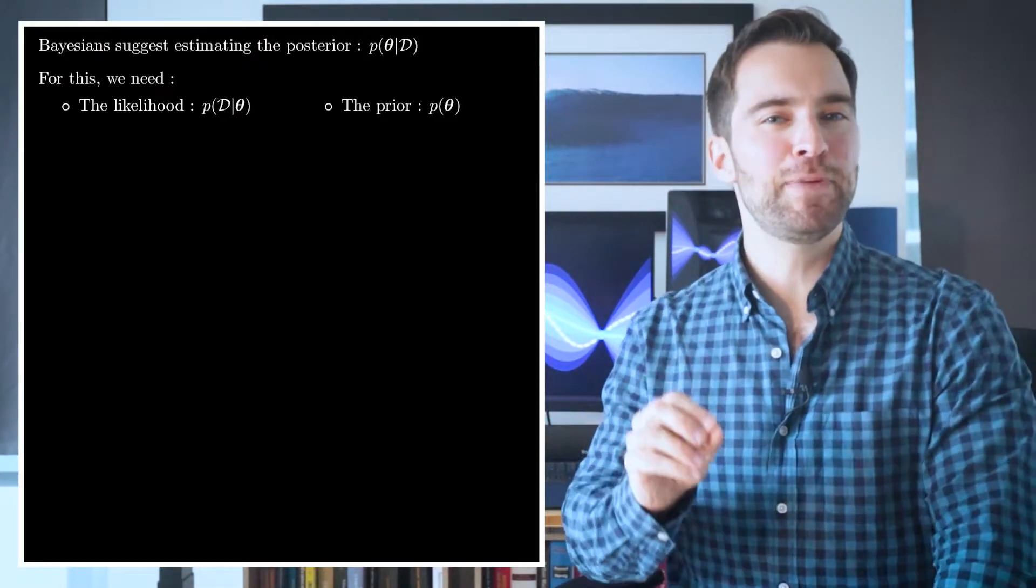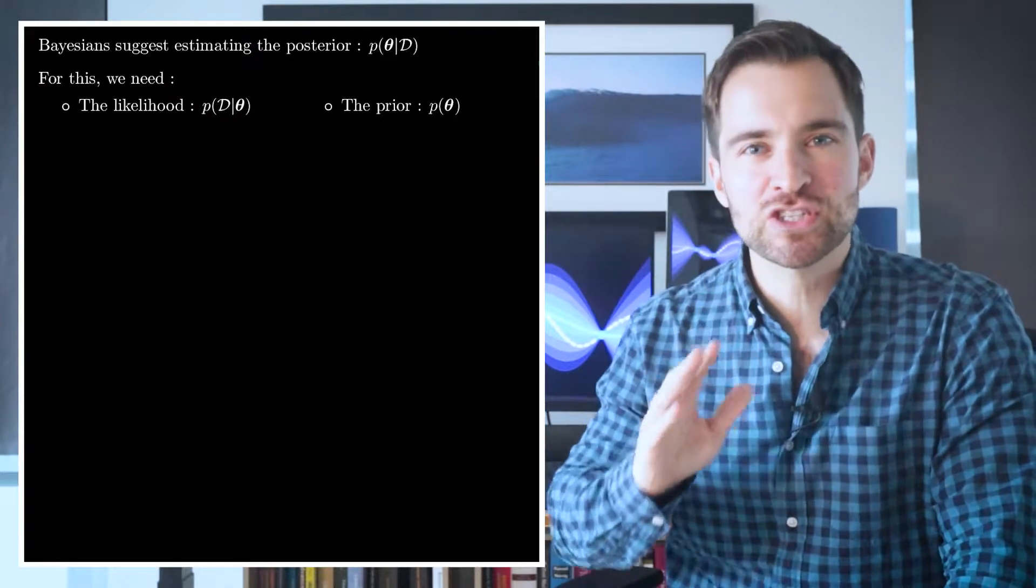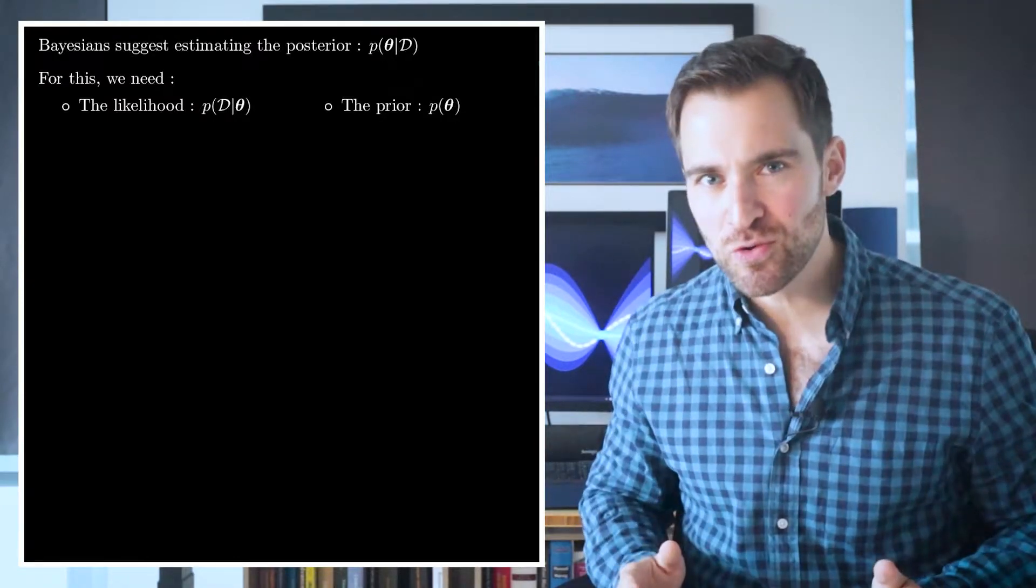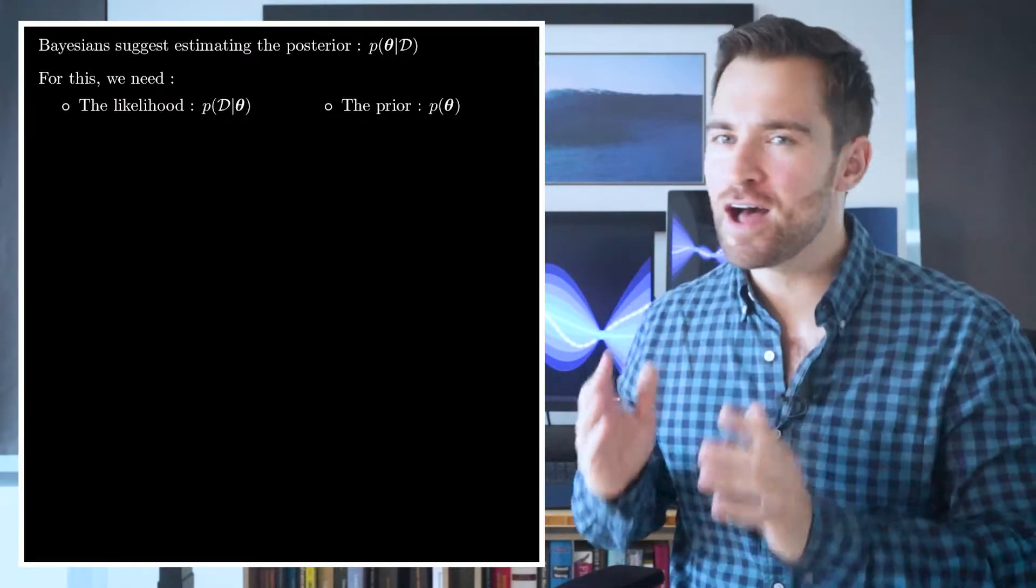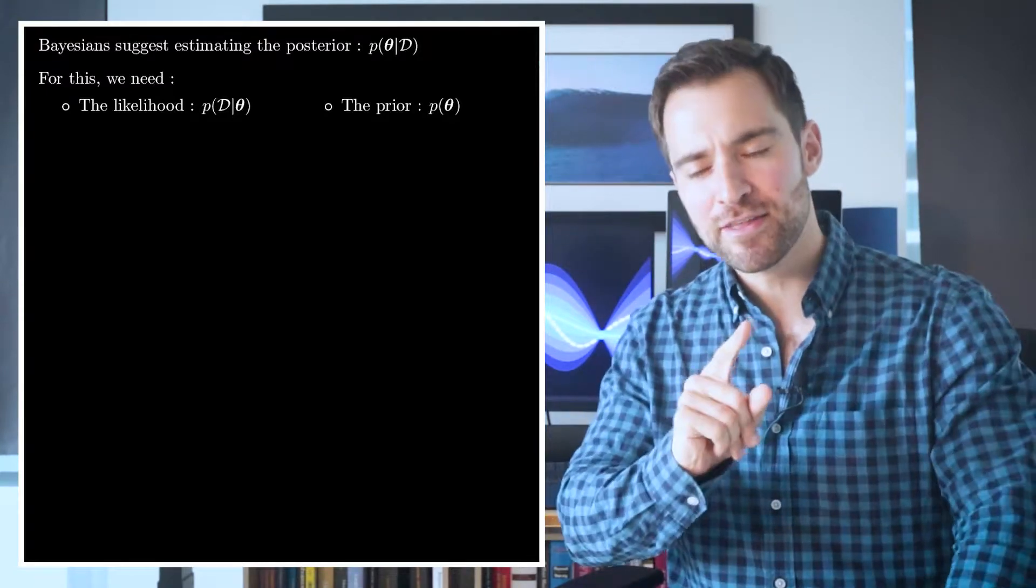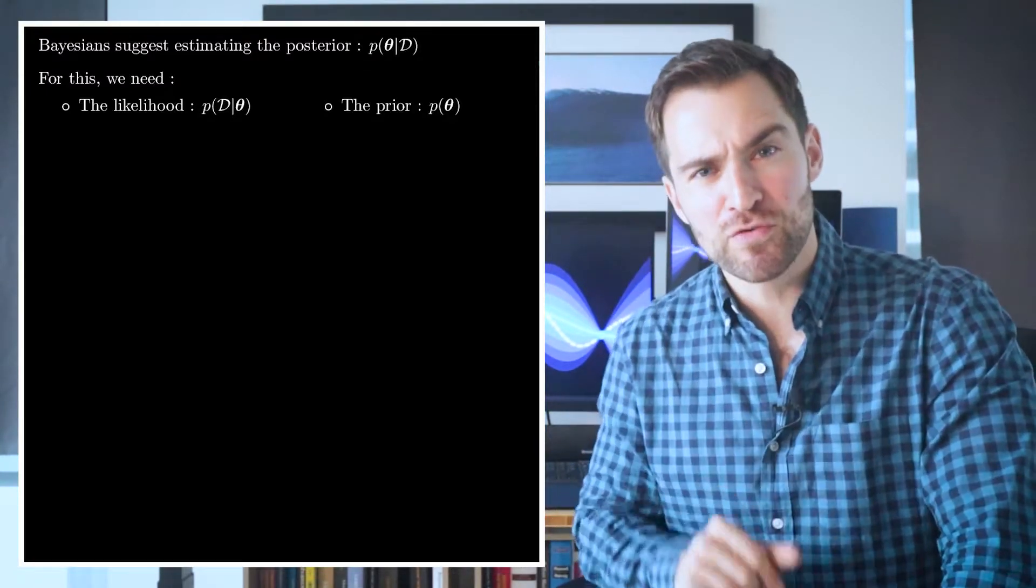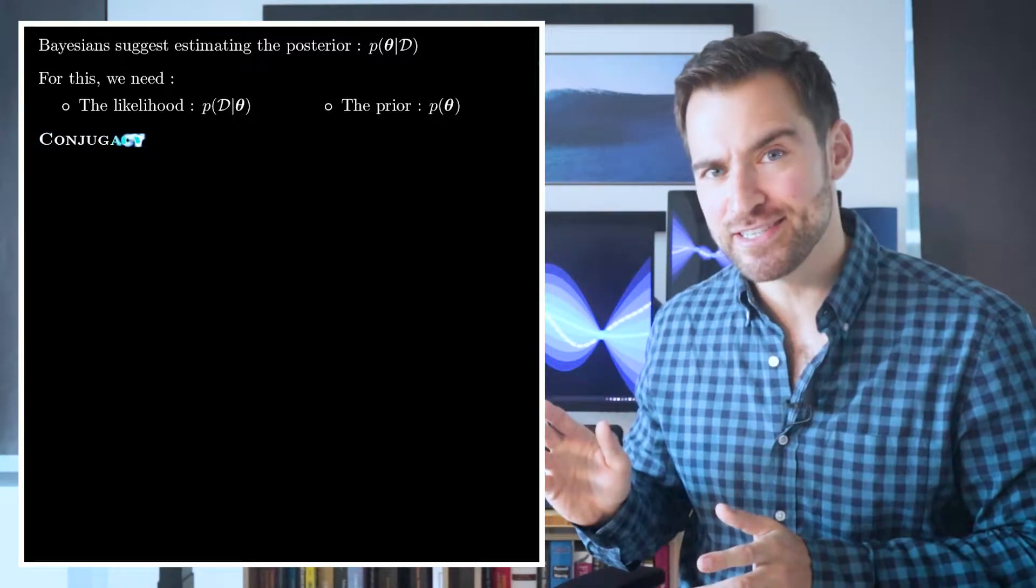Now it turns out, fortunately, that the Bayesians and exponential family get along super well. The kids go to the same schools. They get dinner together. They celebrate the holidays together. They go camping. They're the best of friends. And it's for one reason.